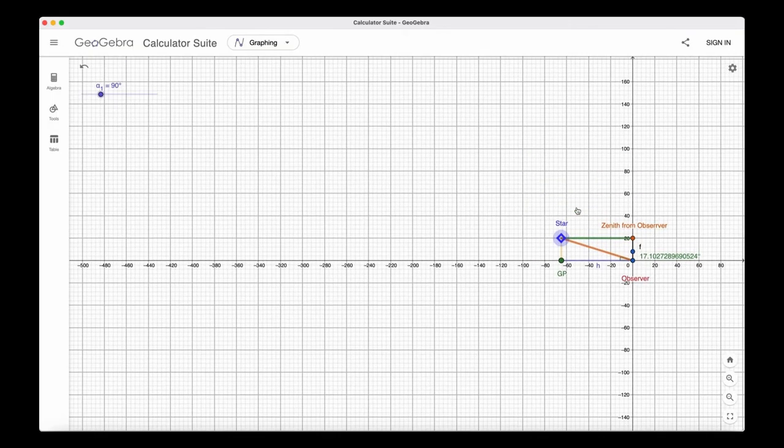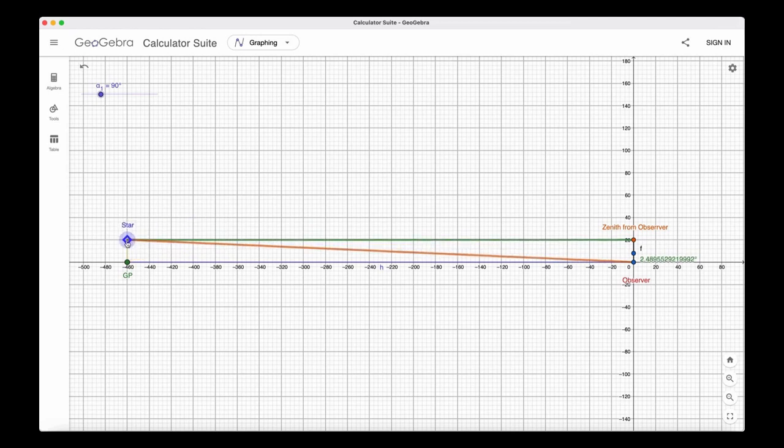Then he moves the GP to a position at minus 460 and sees that the elevation angle has reduced to 2.49 degrees.